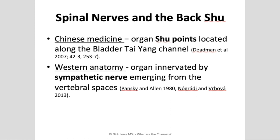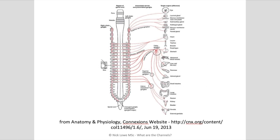Another very interesting correlation between the nervous system and the channels in Chinese medicine are the back shu points, located along the spine, roughly over their respective organs. The heart shu is roughly located over the heart itself. In Western medicine, each organ is innervated by one or more sympathetic nerves which emerge from the vertebral spaces and travel to send signals to the organs. This suggests that when we needle the back shu points, we may be stimulating or affecting these sympathetic organ nerves, which then pass signals to the organs themselves. I would love to see this tested in research.